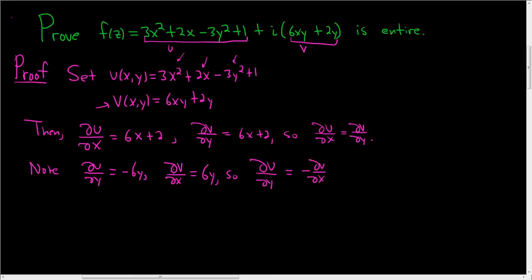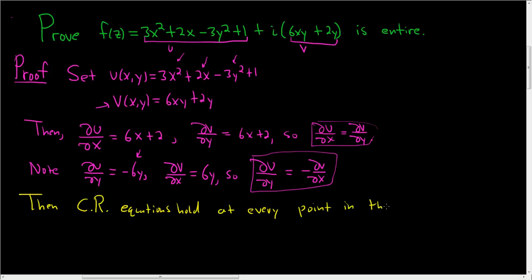So we have that ∂u/∂y is equal to minus ∂v/∂x. Right? Because if we put a minus sign in front of ∂v/∂x, we end up with -6y, which is the same thing as ∂u/∂y. So we have that the Cauchy-Riemann equations hold at every point in the complex plane.